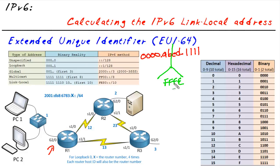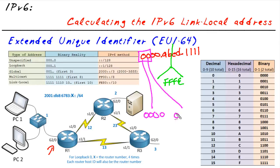Now it gets a little more interesting. We're also going to flip one bit before we actually make this our EUI-64 address — what the router is going to do. These first two characters represent the first eight bits. If we break those out into binary, this would be 0000 0000. Here's our handy dandy conversion chart. What we're going to do is flip the seventh bit, which is often referred to as the U bit — U as in universe — the universal/local bit.